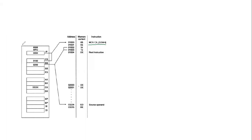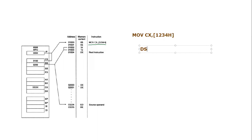Now let's consider a specific example with given register values. The instruction is MOV CX, [1234h]. The value stored at address 1234h should be moved into the CX register. Since no segment override prefix is used, we will use the data segment register. So the physical address will be calculated as DS colon 1234h. The data segment value is 0200h, so: PA = 0200h × 10h + 1234h.